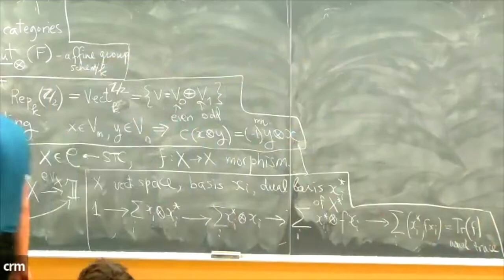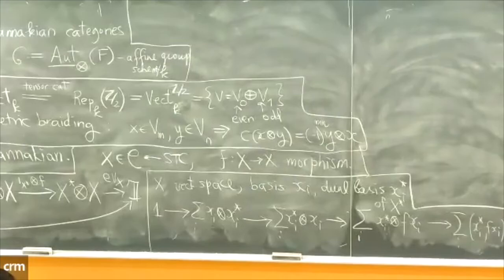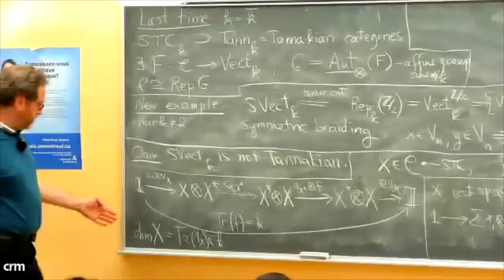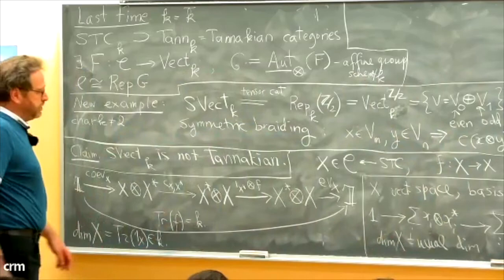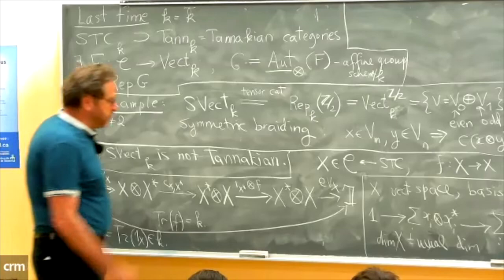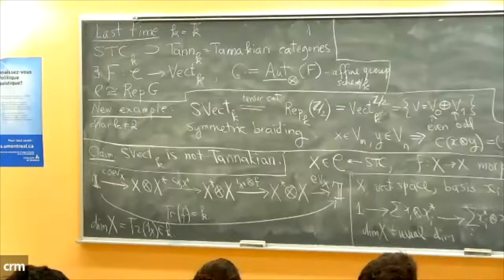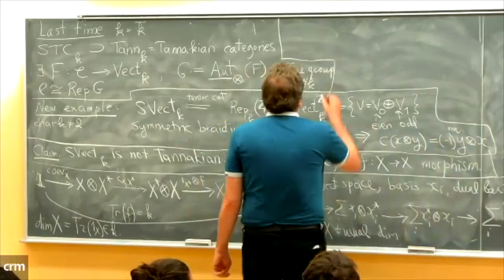For vector spaces, dimension is the usual dimension — a non-negative integer regarded as an element of k. It could be zero if n is divisible by the positive characteristic of k. These trace and dimension are preserved under monoidal functors since the entire diagram is preserved. So this holds in the category of vector spaces and therefore in any Tannakian category.